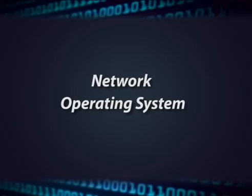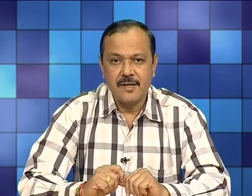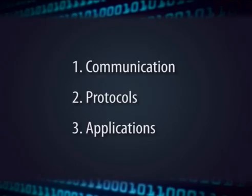Network operating system: An operating system is an interface between the users and the computer. It is the first program loaded into the computer by a boot program and remains in memory at all times. Users cannot perform any operations in a network without an operating system, so it is very important for networking. The network operating system is made up of different layers — communication, protocols, and application layers — and it allows several physically interconnected people to work with the same resources.